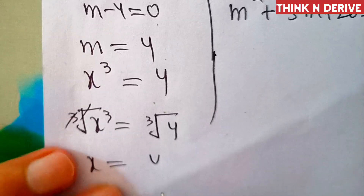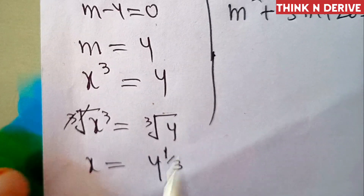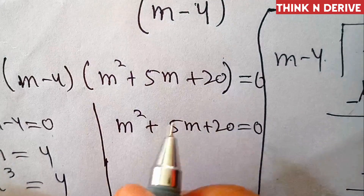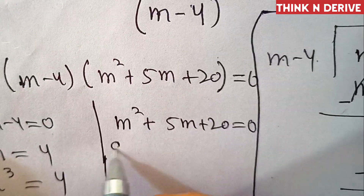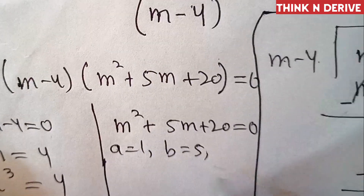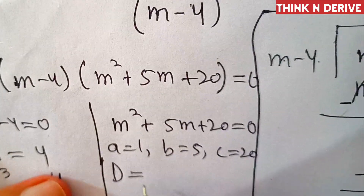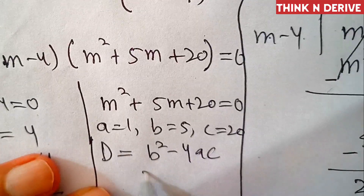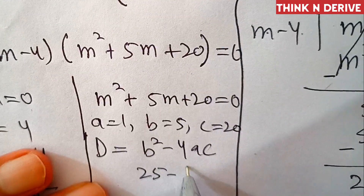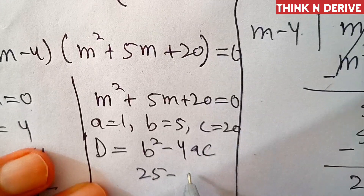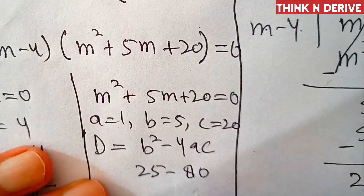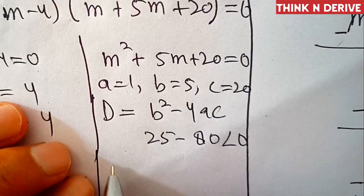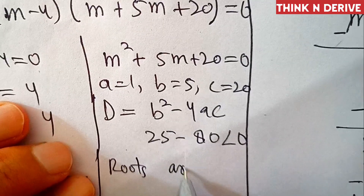We can write this as 4 to the power 1 by 3, and this is one root of the equation. For the quadratic equation with a equal to 1, b equal to 5, and c equal to 20, the discriminant is b square minus 4ac, that is 5 square is 25, minus 4 into 1 into 20 is 80, which is less than 0. So the roots are complex.